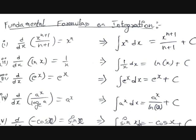d/dx of (−cos x) is equal to sin x. Since d/dx of cos x is −sin x, if you multiply both sides by −1 you get d/dx of (−cos x) = sin x. So the integral of sin x dx is equal to −cos x plus c.